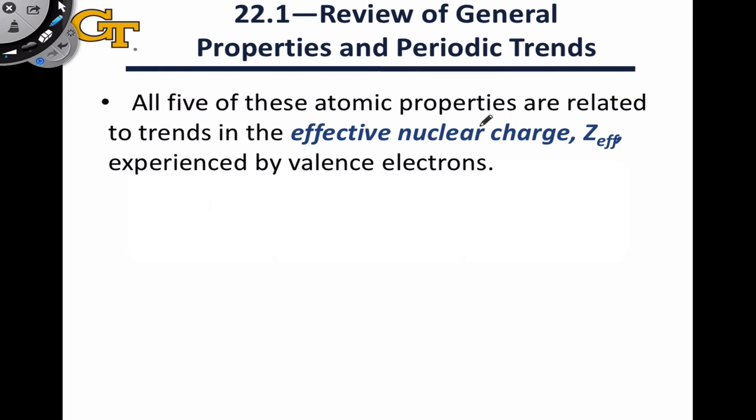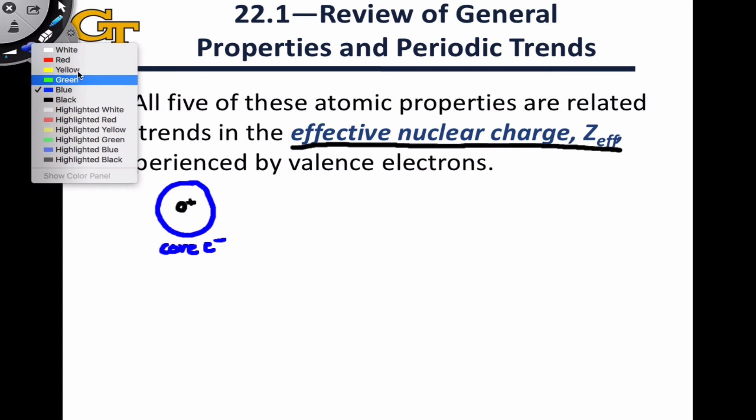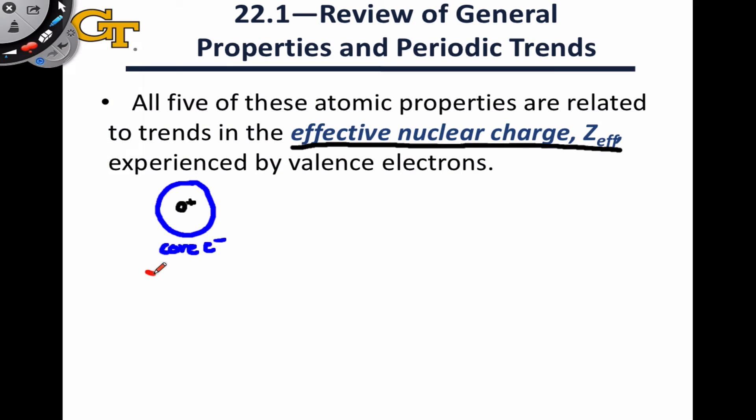All five of these key atomic properties can be related back to the concept of effective nuclear charge, or Z-effective, which is a concept we've seen before. We can think of the atom as containing a core nucleus of positive charge, a set of core electrons that are relatively close to the nucleus, and then an outer set of valence electrons, which are farther away from the nucleus. If we call the total amount of positive charge Z, that's just equal to the atomic number.